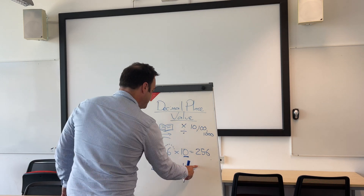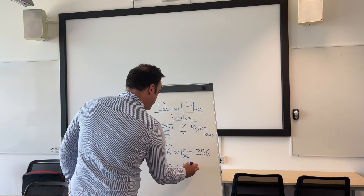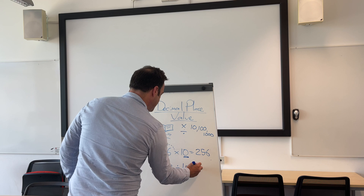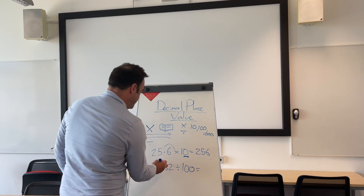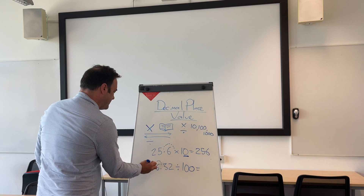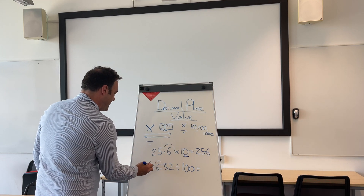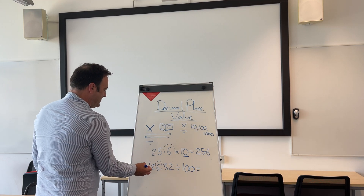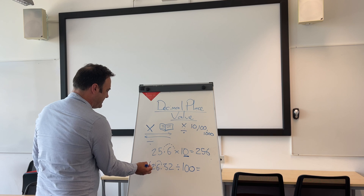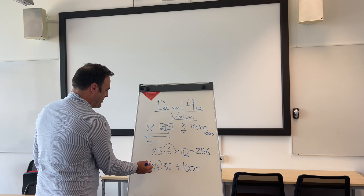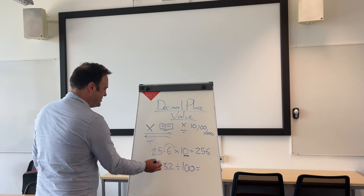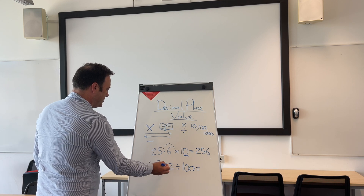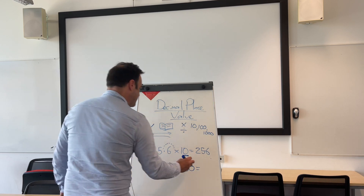But if it was divided by 100, it would in fact do two jumps and end there. What this gives you — you wouldn't write 0.2632 starting without a zero; you'd put a zero at the beginning.